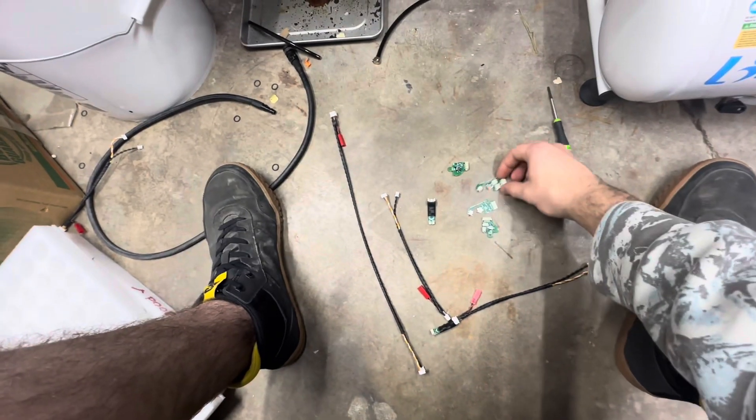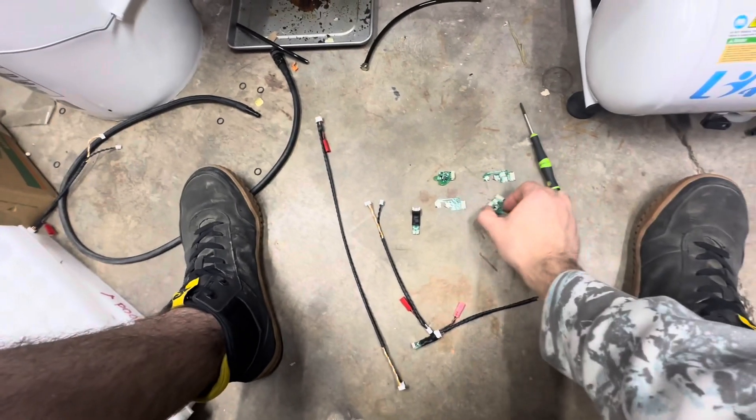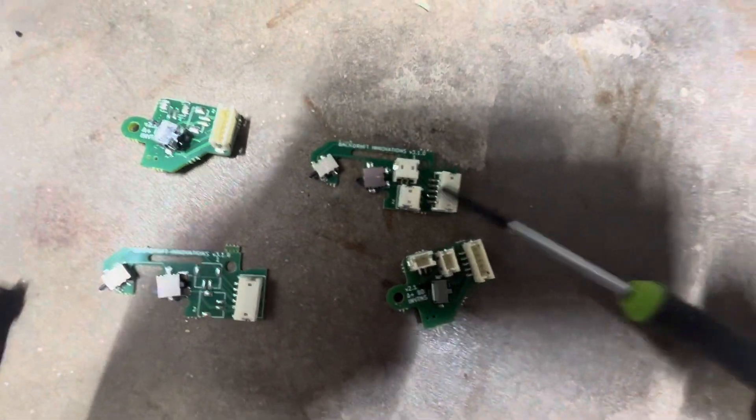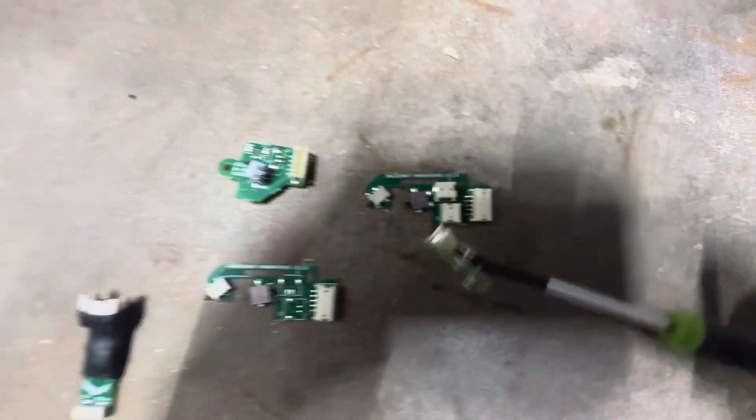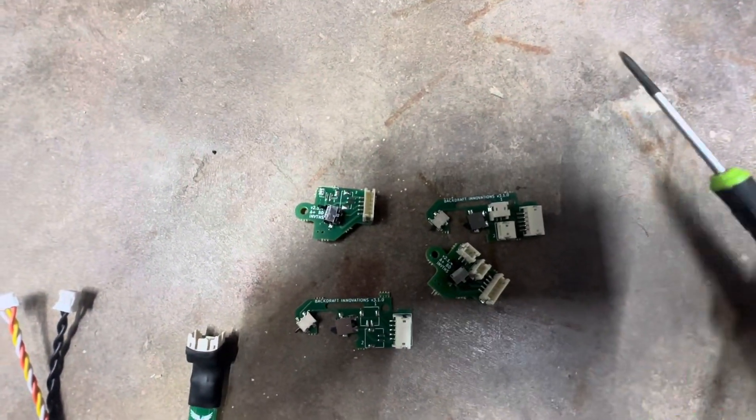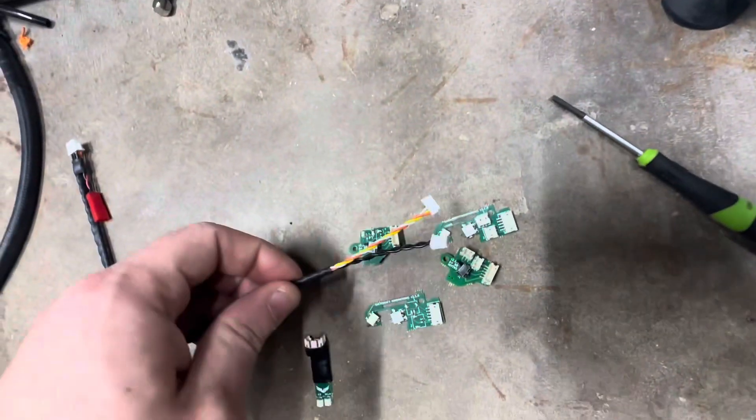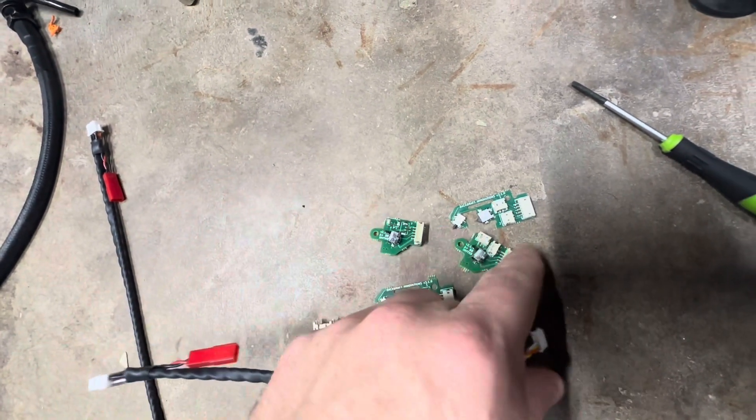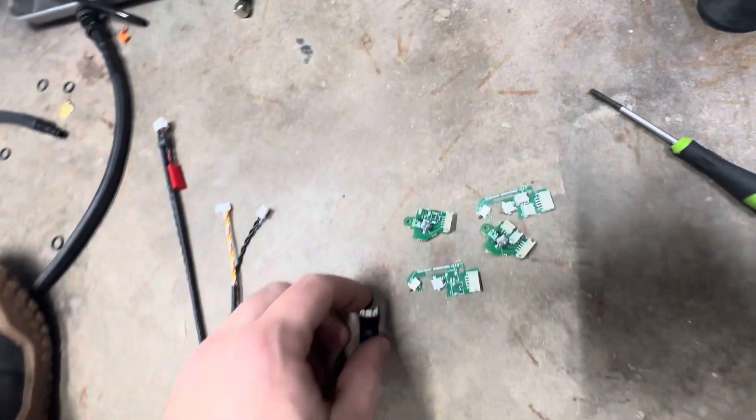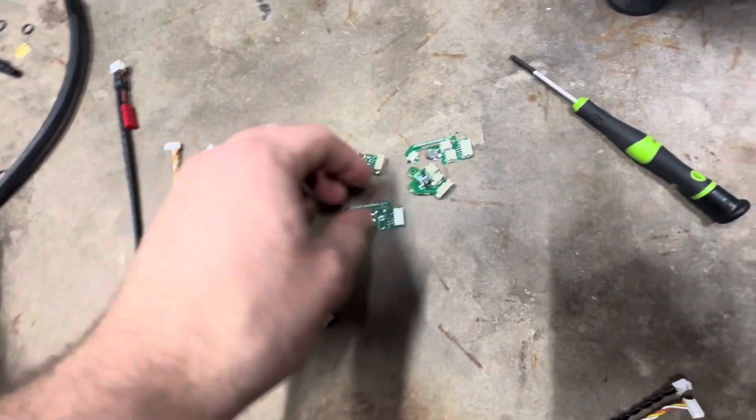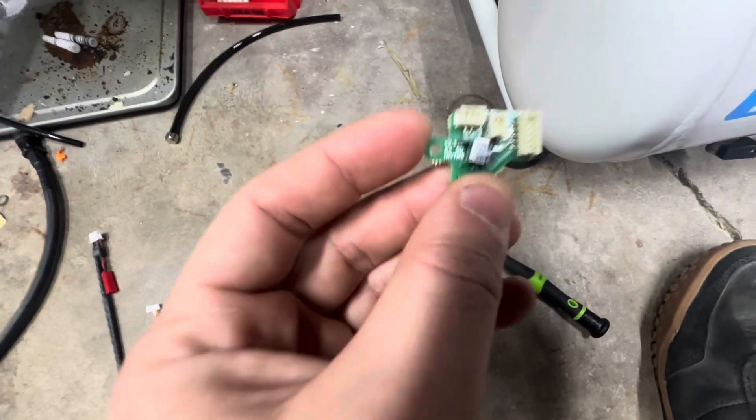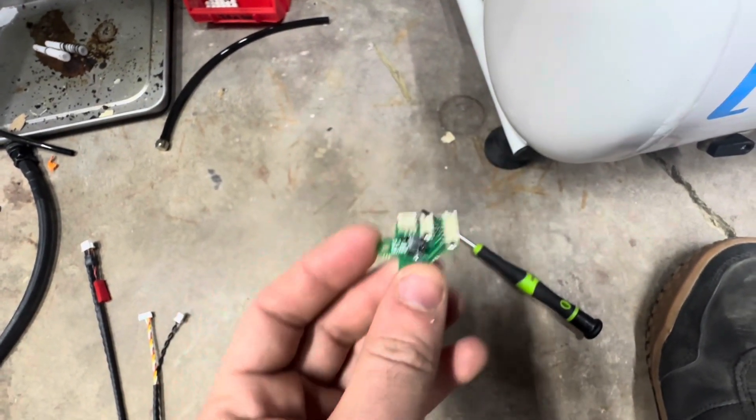The first thing that you notice is that some of these trigger boards have more switches or more connectors than others. That's because these ones are Polarstar compatible, and these ones are designed to be as cost-effective as possible. Our wires actually split off, so we don't need either of those connectors because of the way that our FCU is designed. But if you want to use our trigger boards with Polarstar electronics, you can. You just have to get these additional connectors put on them.